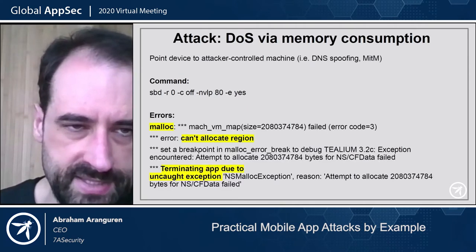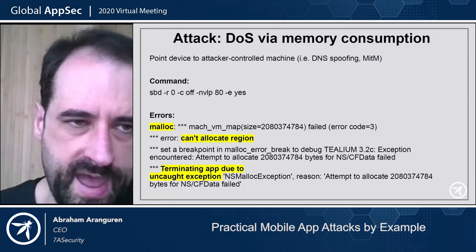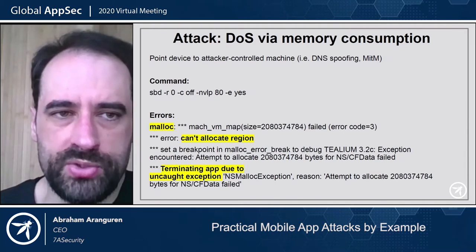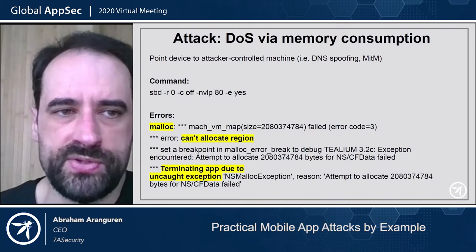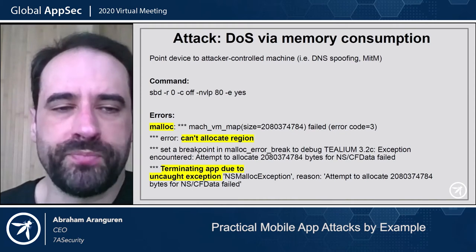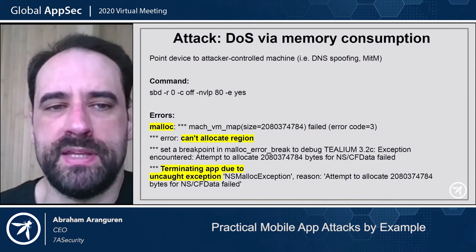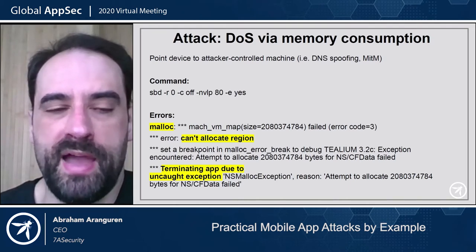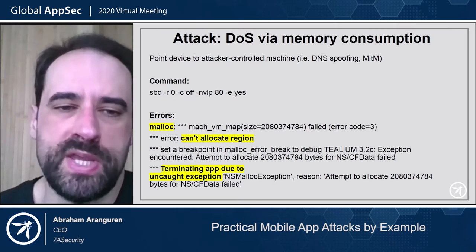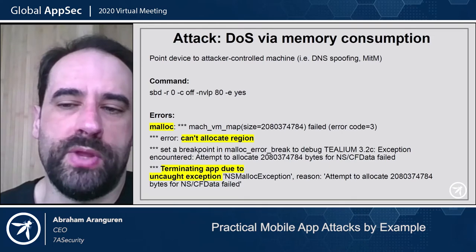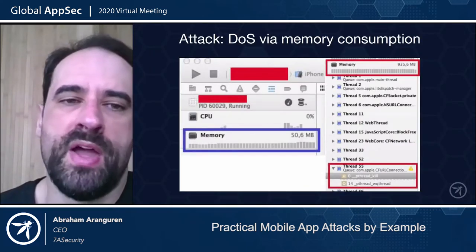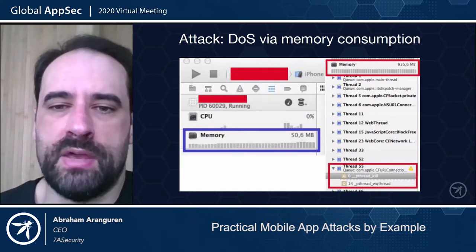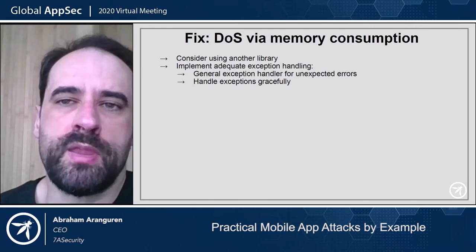This is basically a denial of service. We have a Netcat clone, SBD, and it's listening on port 80. Every time you close it, it's going to spawn again with a delay of zero seconds. Whatever connects to port 80 is going to receive the output of the 'yes' command, which just keeps saying yes, yes, yes. So it sends a lot of data and we can crash the application — the app runs out of memory and crashes.